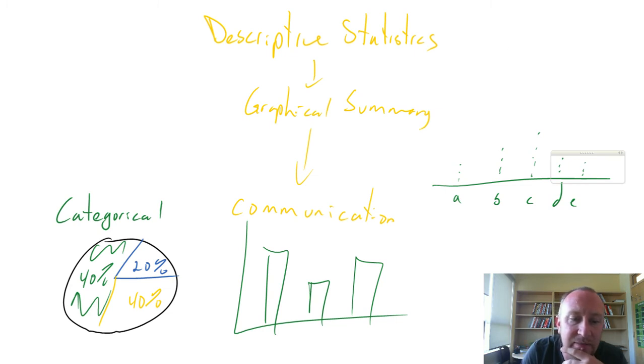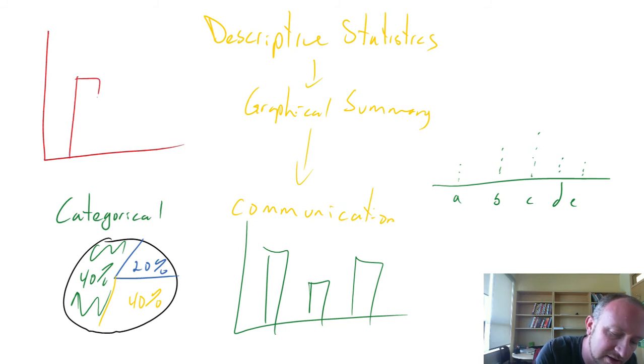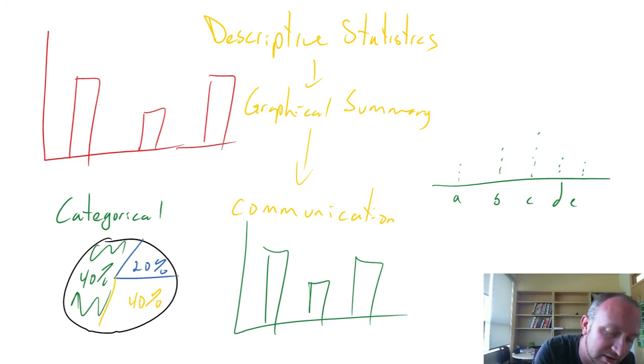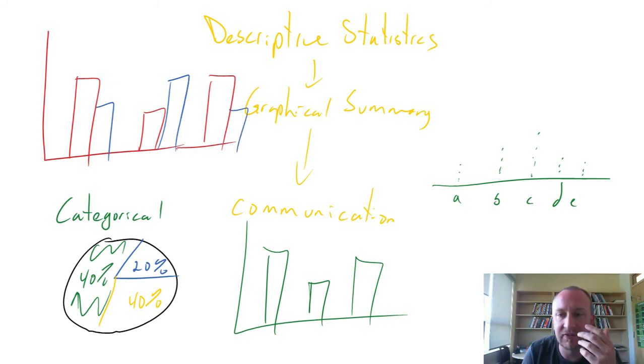Maybe we'll look at multiple variables at the same time. So maybe I can do a bar chart and red, this is variable one, looks something like this and I want to compare that against some other variable and so it looks like this. I don't know, we're just making stuff up here. But there's many different ways that we can go about communicating our data.